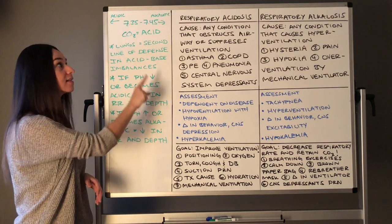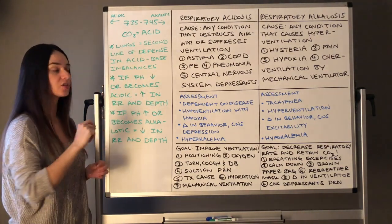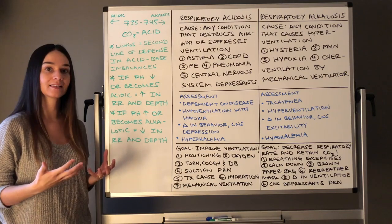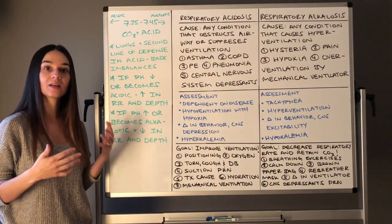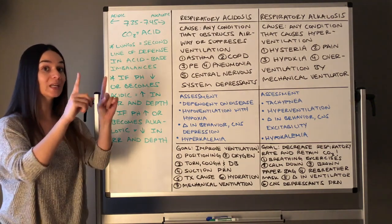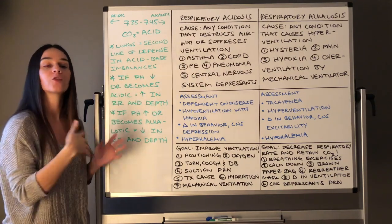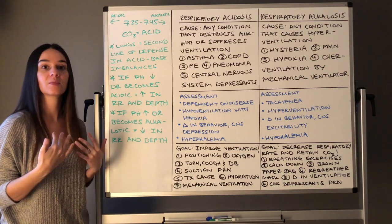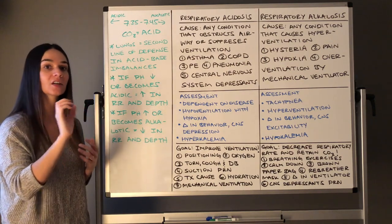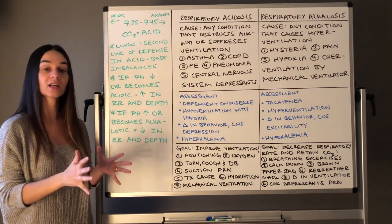If your pH decreases — meaning it's getting more acidic — your lungs will start to increase respiratory rate and depth. CO2 is an acid, so if our pH is decreasing, our lungs are going to breathe faster and deeper. When we exhale, we're exhaling carbon dioxide off, helping to get rid of that acid.